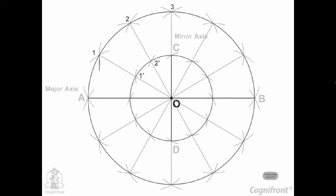Through point 1 on the major axis circle, draw a line parallel to CD, the minor axis. Through point 1' on the minor axis circle, draw a line parallel to AB, the major axis. The point P1 where these two lines intersect is on the required ellipse.